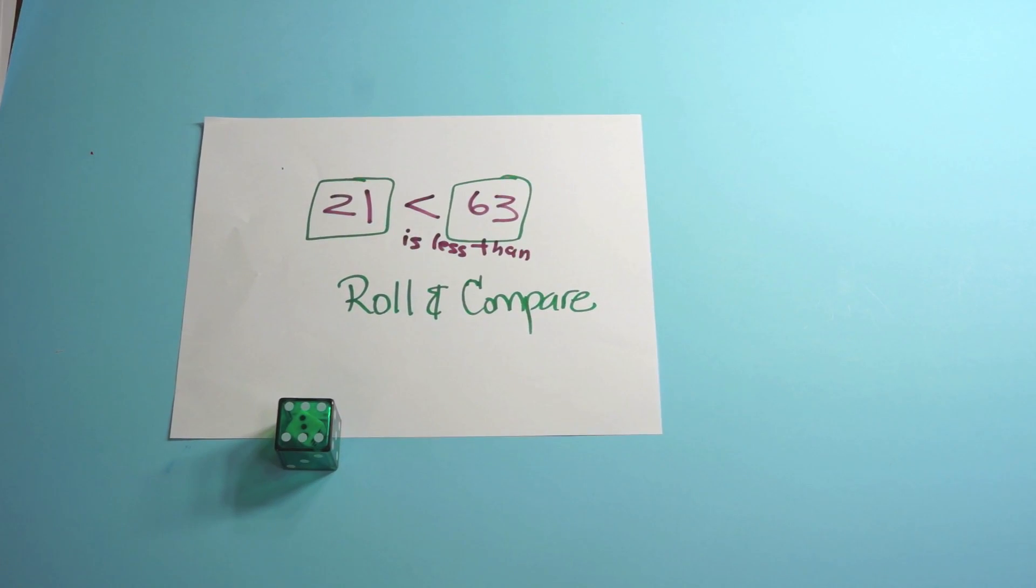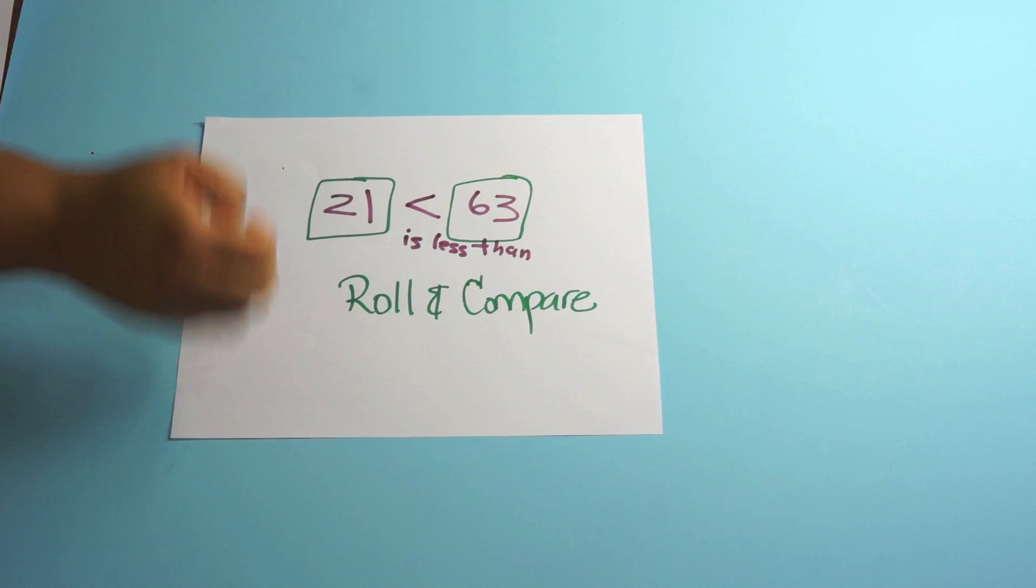And I have the kids write out is less than because I want them to use the math language. Remember language is super important. Precision. It's part of the precision standard or practice rather. And kids that you can use math words. Not just say 21 is smaller than 63. They should be able to say that 21 is less than 63.